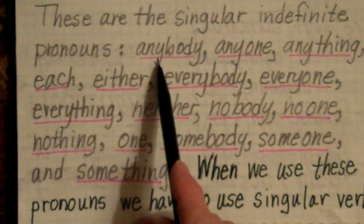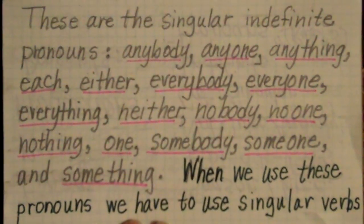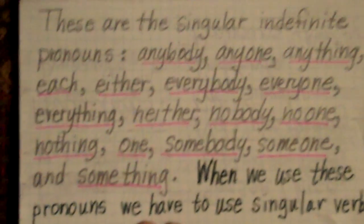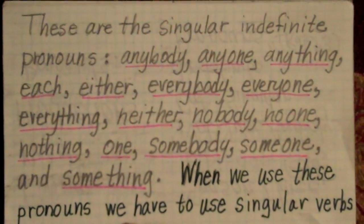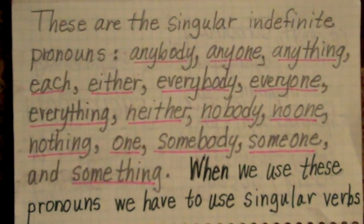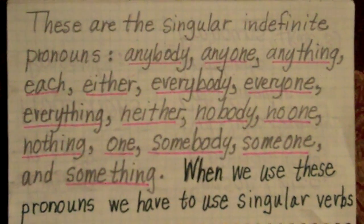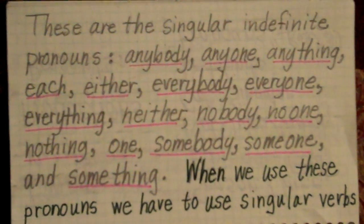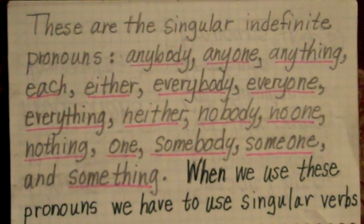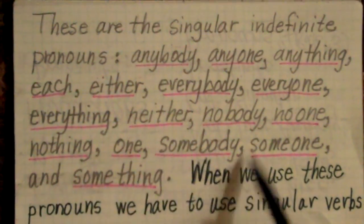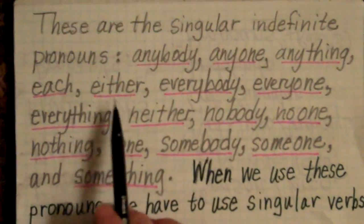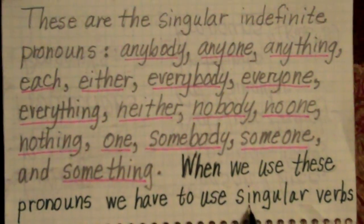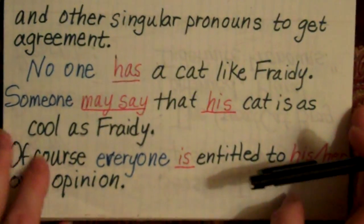As you can see, you can understand a little bit better maybe looking at these — what it means that they won't have a specific referent; they're not going to refer to a specific person. They're going to refer to a group of people that's not definite, not really named. But when we use these pronouns right here, because these are the singular indefinite pronouns, we have to use singular verbs and other singular pronouns to get agreement.